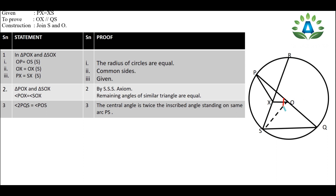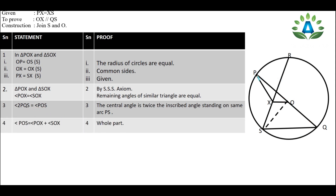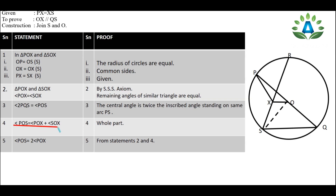Now, looking at arc PX, we can see the central angle POS, and the inscribed angle PQS standing on the same arc PX. We know that the central angle is twice the inscribed angle standing on the same arc. Therefore, angle POS equals twice angle PQS. Now angle POS is composed of two angles: angle POX and angle SOX, so POS equals POX plus SOX.